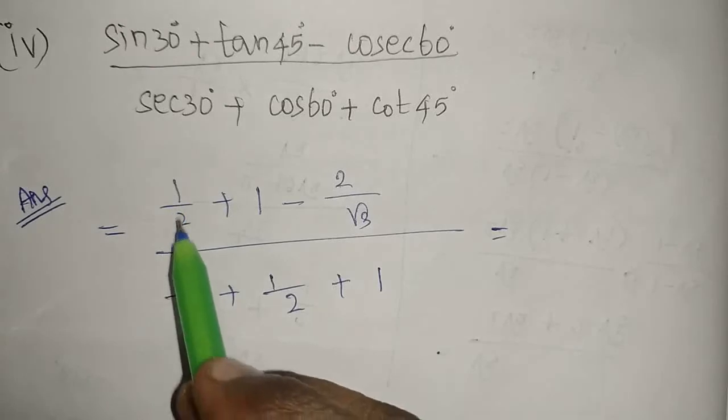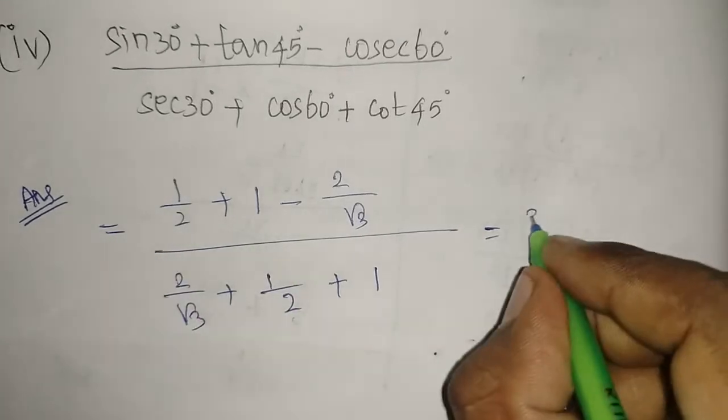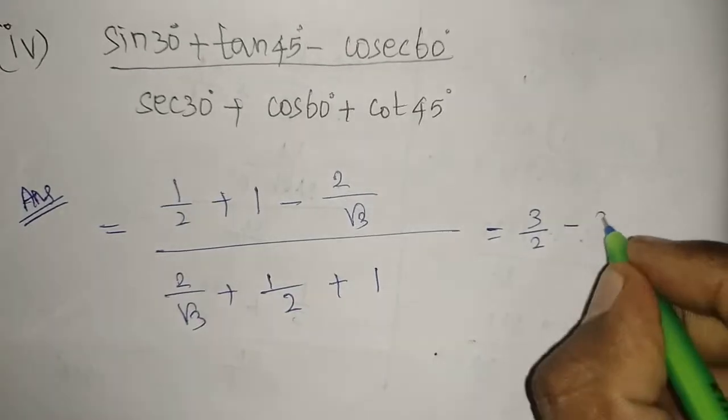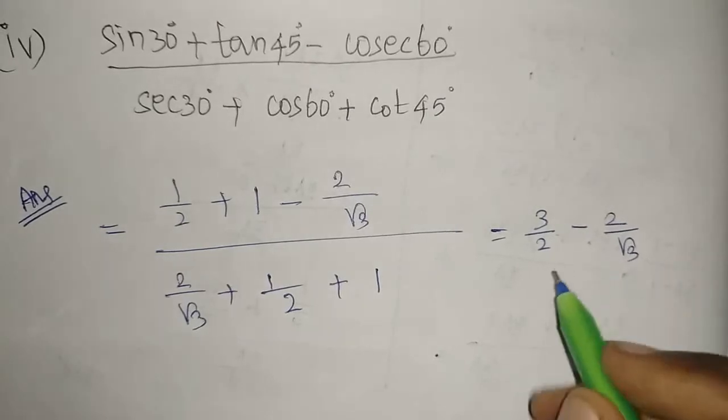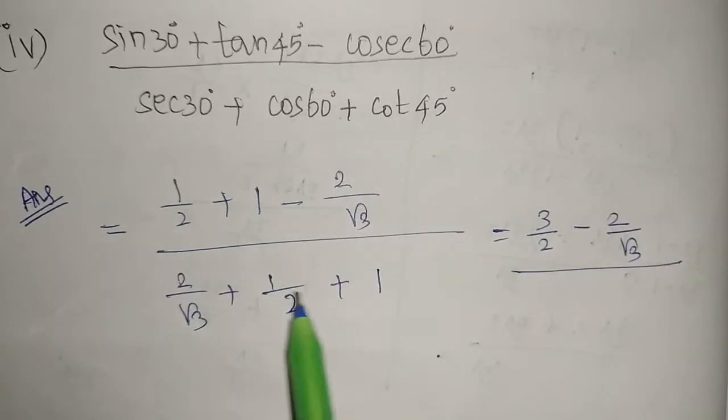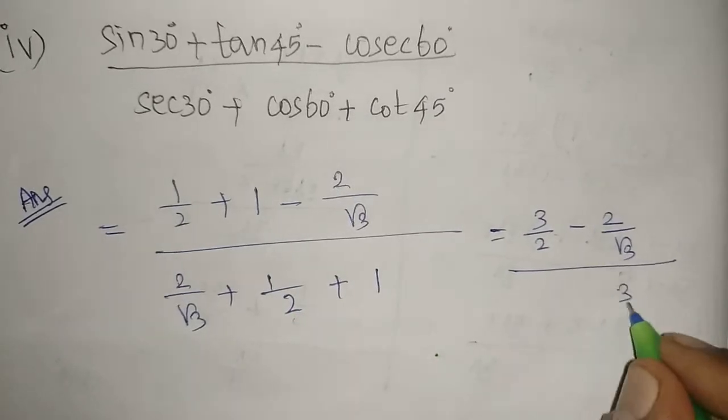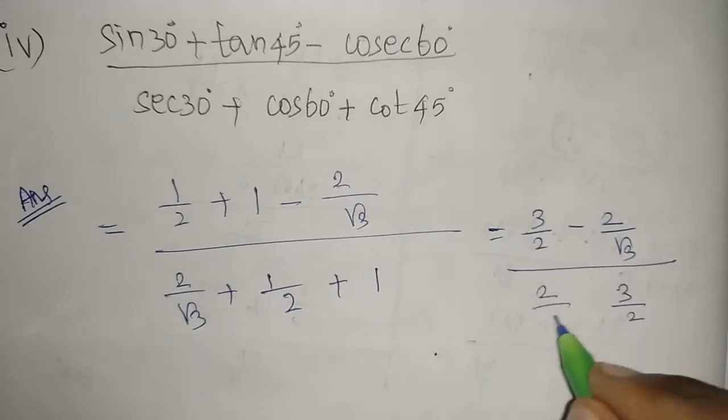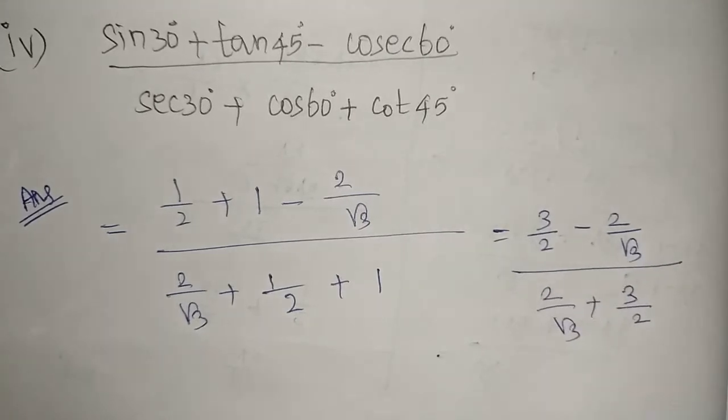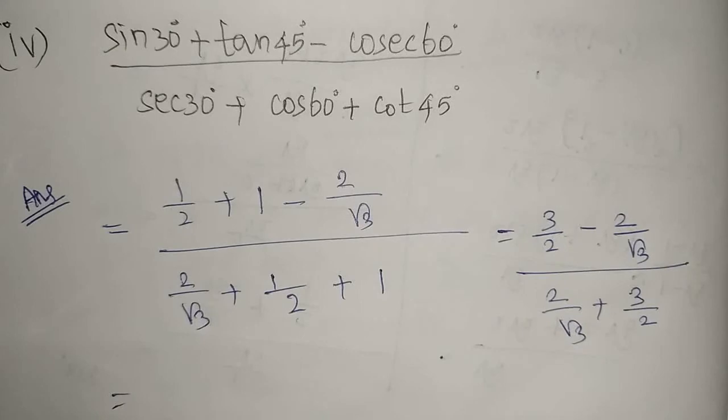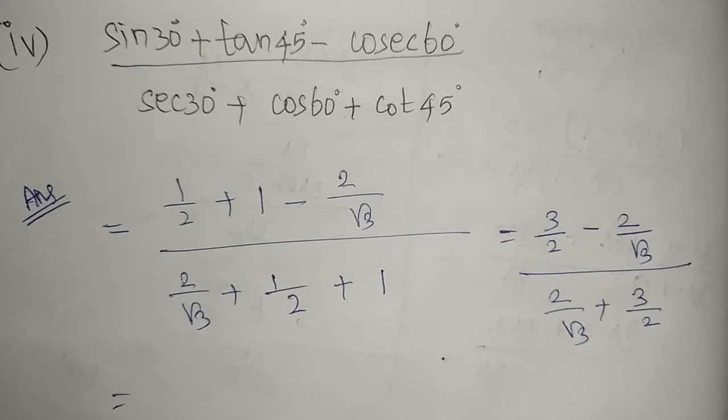Now we need to simplify this. Half plus 1 gives 3/2. Half plus 1 here you will get 3/2, and here 2/√3 we have.